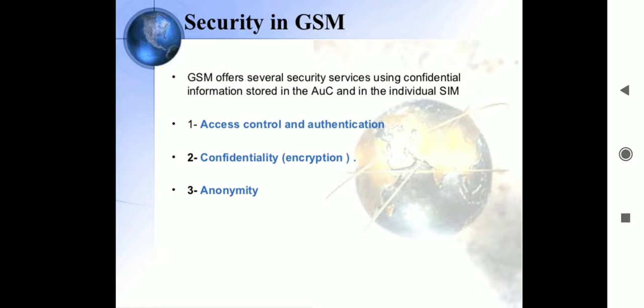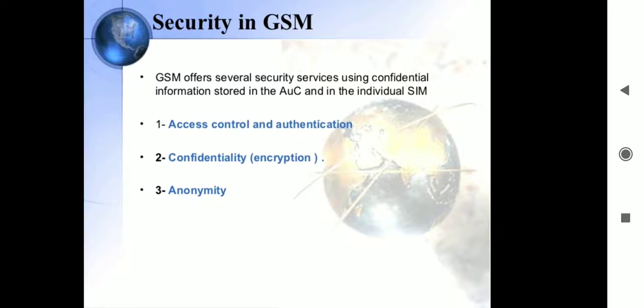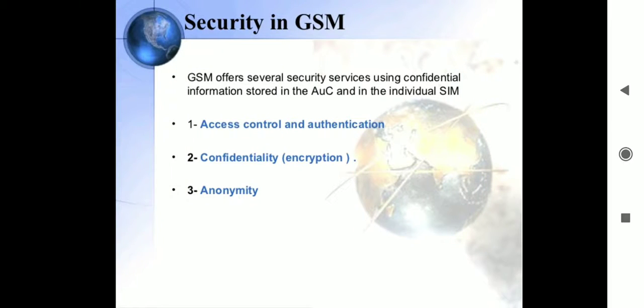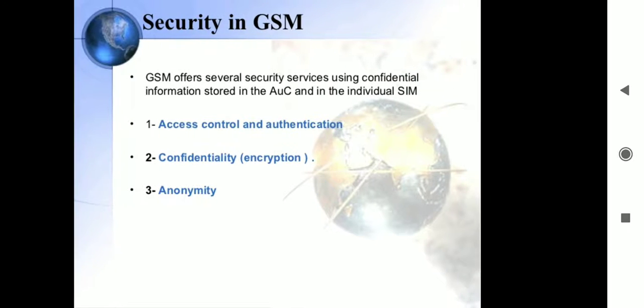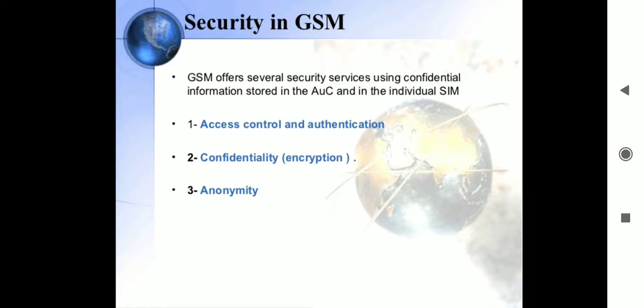Privacy mechanisms — encryption and use of TMSI — are used only over the radio path, not within the fixed network where communications are transmitted in the clear, as in PSTN and ISDN. In GSM, each mobile user is provided with a Subscriber Identity Module (SIM). Two versions of SIM are defined: one is a chip card the size of a credit card inserted into the mobile terminal; the other is a small plug-in SIM installed on a semi-permanent basis, suited to small GSM handsets.